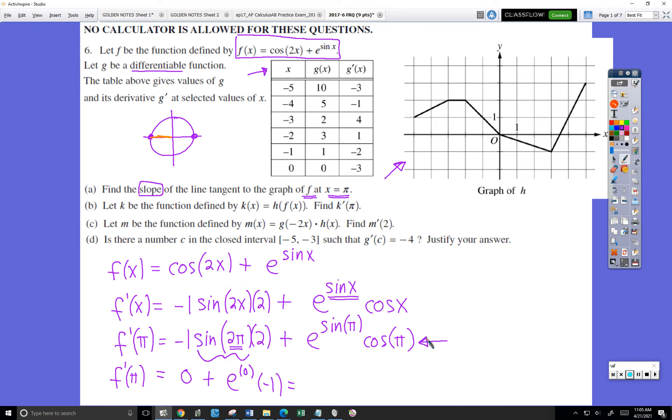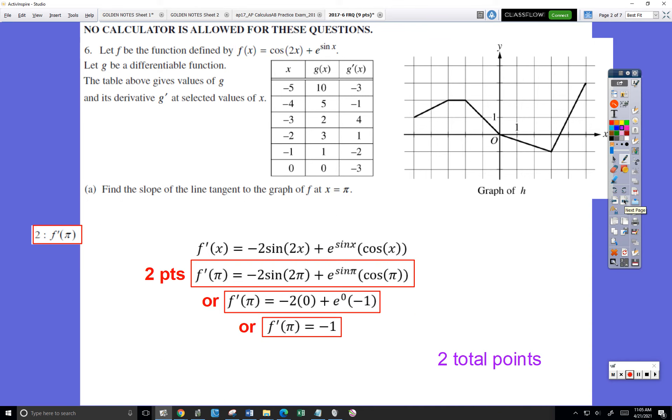Again, stop here and get full credit on the FRQ. e to the zero is one times negative one, the final answer is negative one. Let's see how points were awarded for part a. Two points for finding the derivative—oh I see, two points for the whole thing.